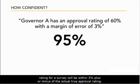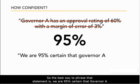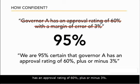So the best way to phrase that statement is: we are 95% certain that Governor A has an approval rating of 60% plus or minus 3%.